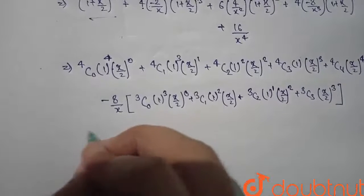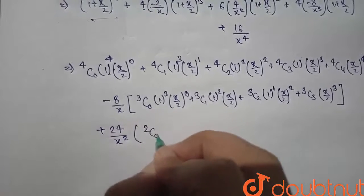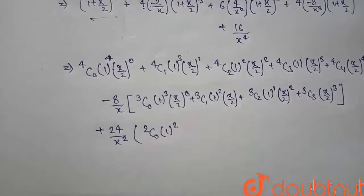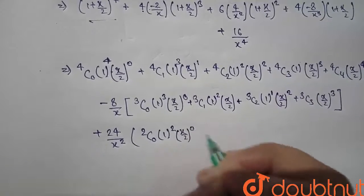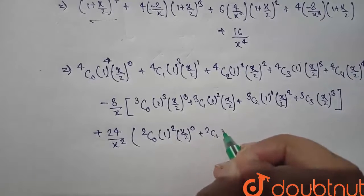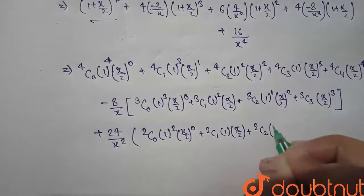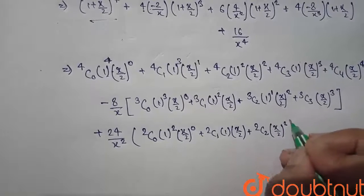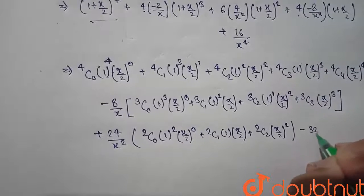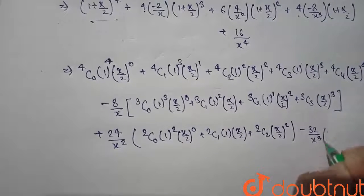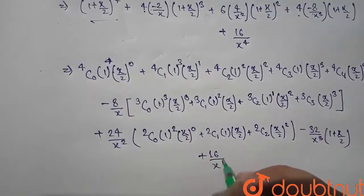For the 4C2 term, we have 4/x² times the expansion of (1 + x/2)^2: 2C0·(x/2)^0 + 2C1·(x/2)^1 + 2C2·(x/2)^2. Then 4 × (-8) = -32/x³ times (1 + x/2), plus 16/x^4.